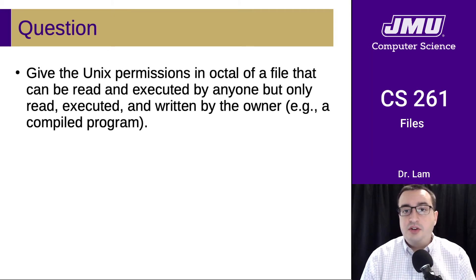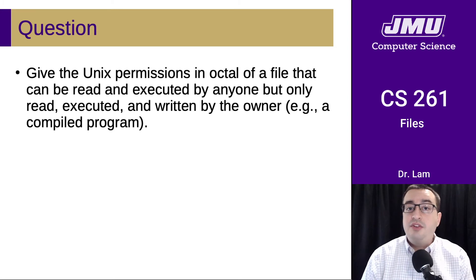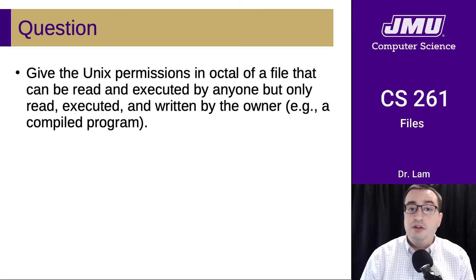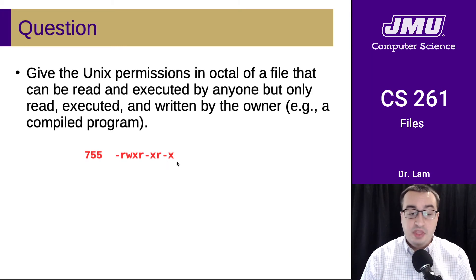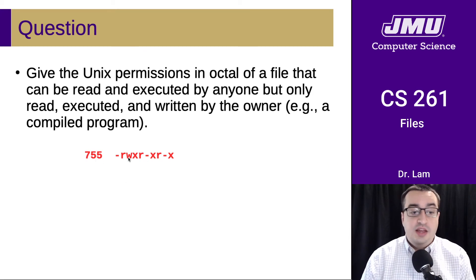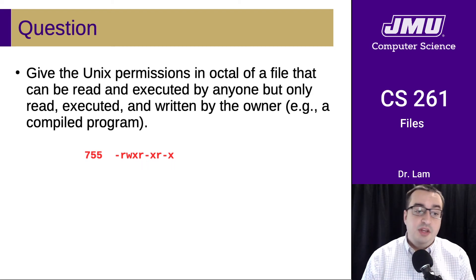Next question: give the Unix permissions in octal of a file that can be read and executed by anyone, but can only be read, executed, and written by the owner. For example, this might be a compiled program where the owner can rewrite it but everyone else just reads and executes it. For group and other, the read and execute bits are set — the first and third bits — giving a binary value of 101, which is 5 in octal. The user has read, write, and execute, which is 7. So the answer is 755.